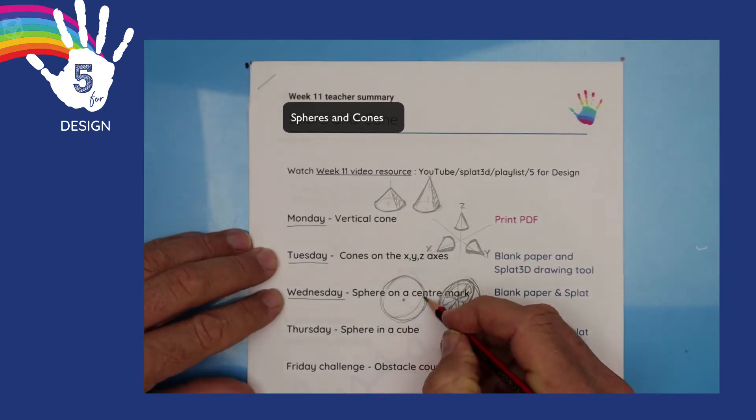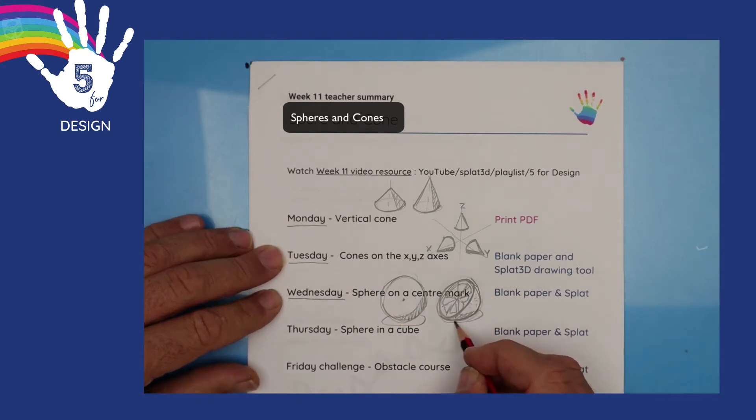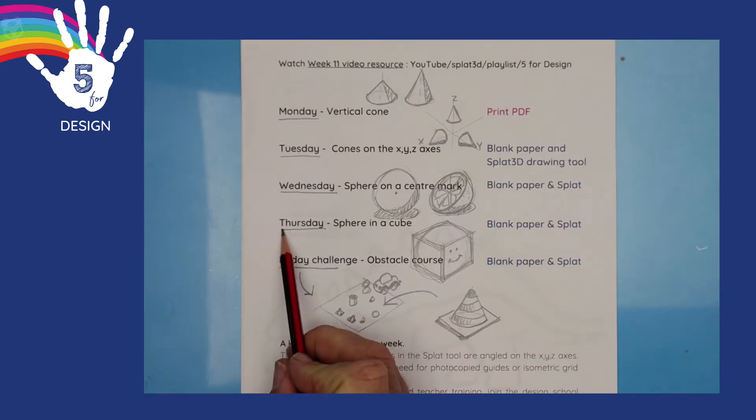Wednesday, we place a dot, and then use that as the center of a sphere. Then we cut the spheres in half, and that's called a hemisphere.